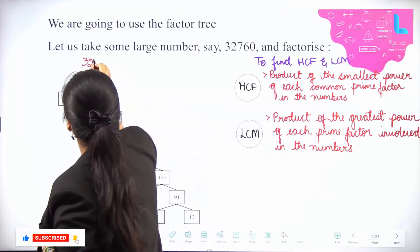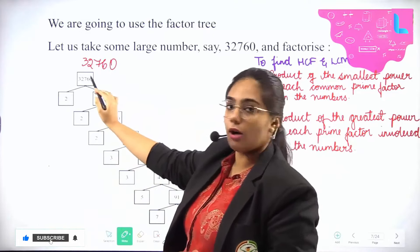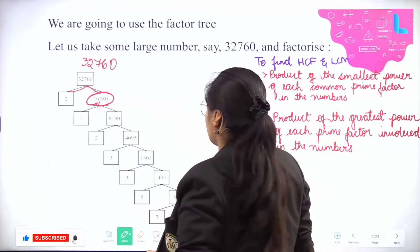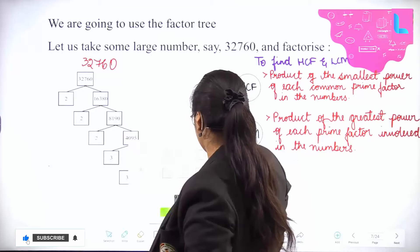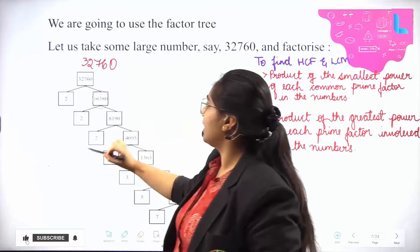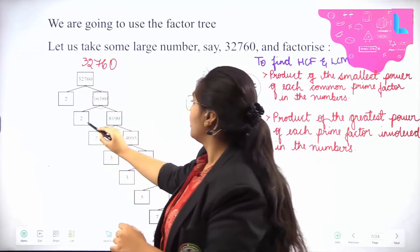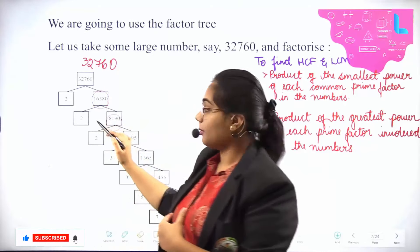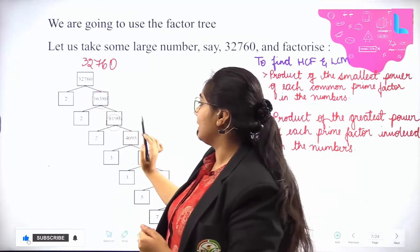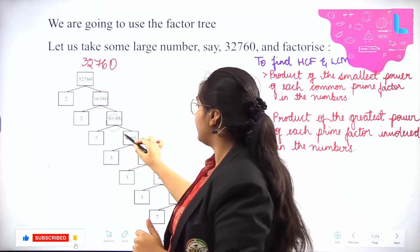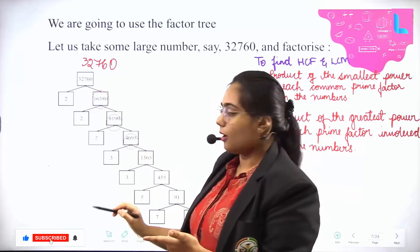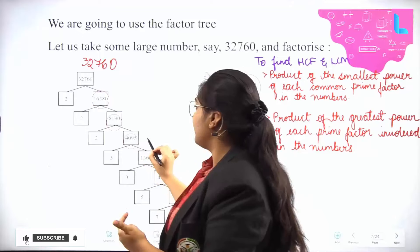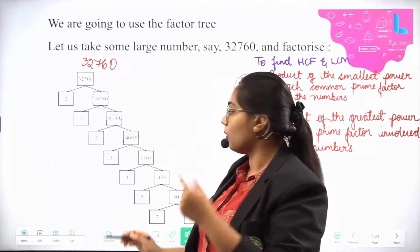The next example is 32,760. It is a composite number. Start: 2 × 16,380 = 32,760. Since 2 is prime, proceed with 16,380: 2 × 8,190. Still composite, so continue: 2 × 4,095 = 8,190. Now 4,095 is not divisible by 2 since it doesn't end in an even digit. Check for 3: 4 + 0 + 9 + 5 = 18, and 18 is divisible by 3, so 4,095 is also divisible by 3.